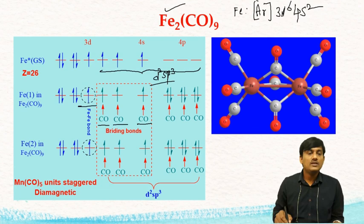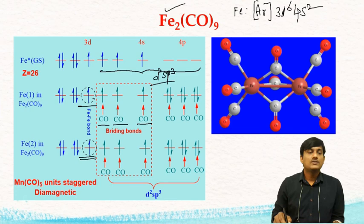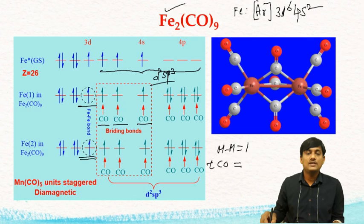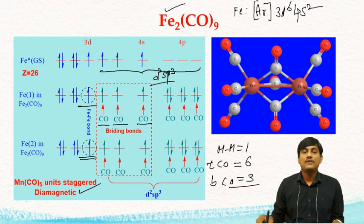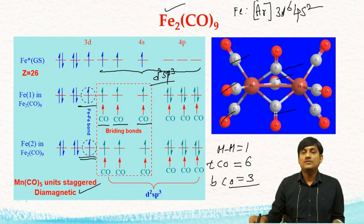There is also a metal-metal bond due to overlapping of pure d-orbitals — not hybridized orbitals. So the structure has 1 metal-metal bond, 6 terminal COs, and 3 bridged COs. Since all electrons are paired for both Fe1 and Fe2, the behavior is diamagnetic. The structure of Fe₂CO₉ shows 3 bridging CO ligands and 3 terminal COs on each iron.